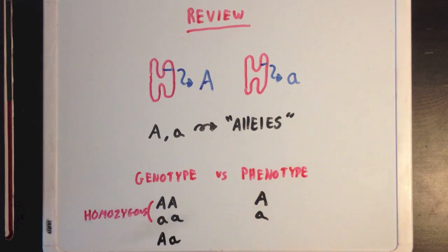When both alleles code for the same phenotype, the cell is deemed homozygous. However, when the two alleles code for different phenotypes, the cell is deemed heterozygous and will ultimately have the phenotype of whichever allele is dominant.